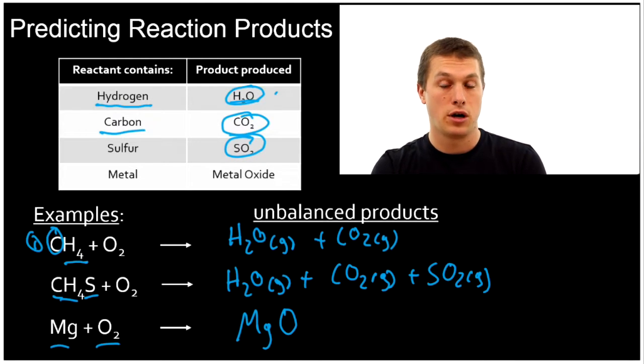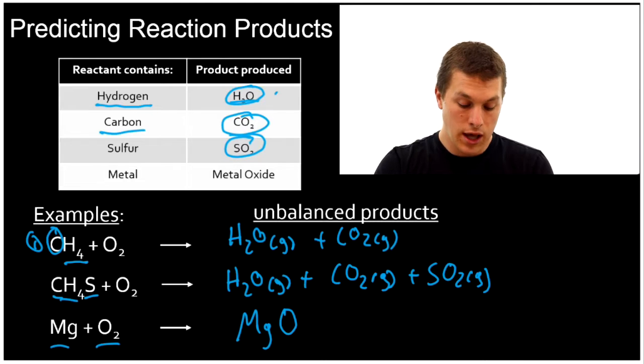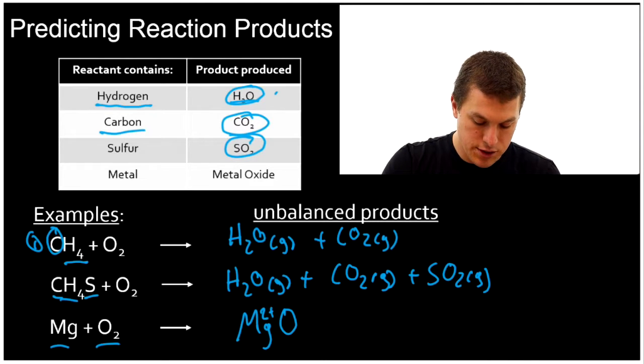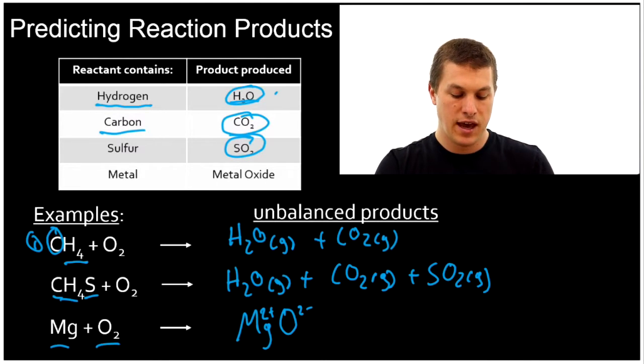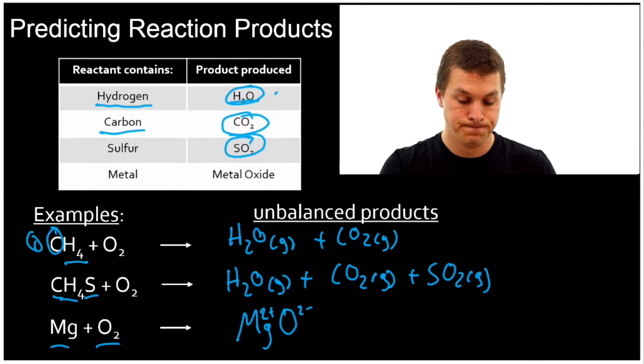What we need to do is make sure that the charges are balanced there, right? So know how to predict the charges from where their positions are in the periodic table. If you're not sure how to do that, I'll link to a video that shows you how down below. And magnesium has a 2+ charge and oxygen has a 2- charge. And that means we're going to get out MgO. That's a balanced charge.